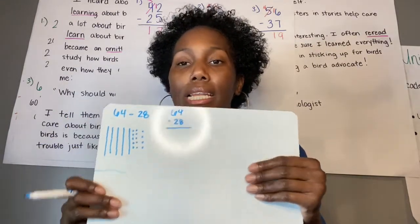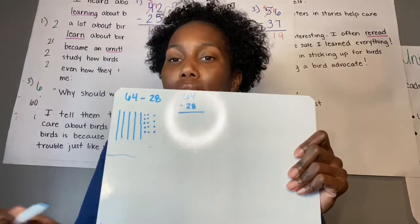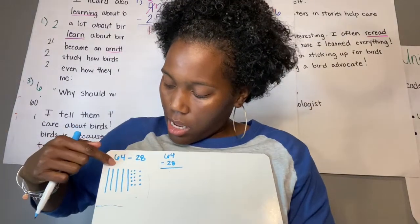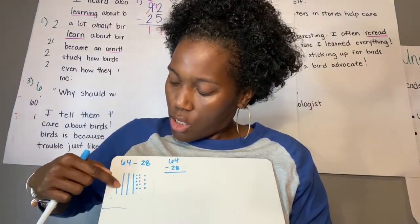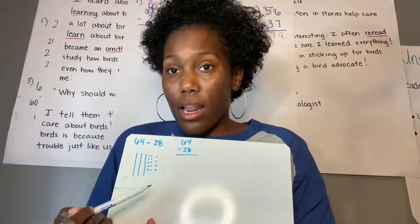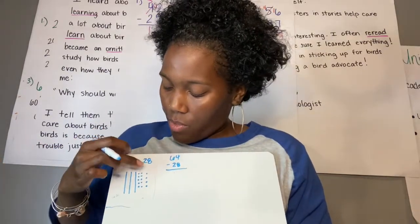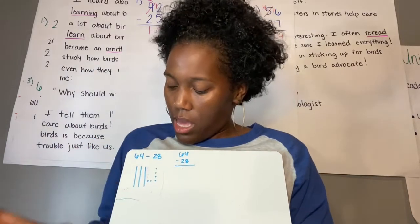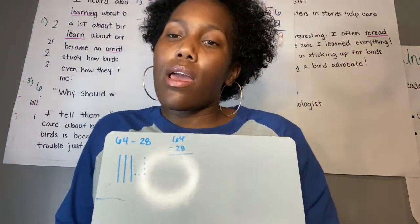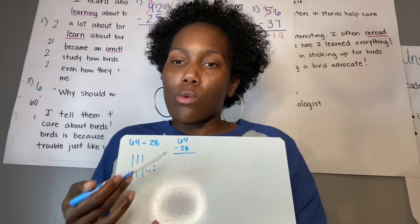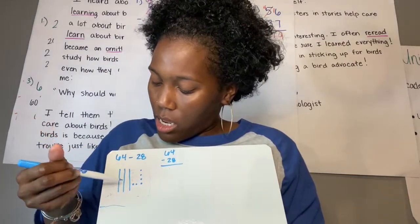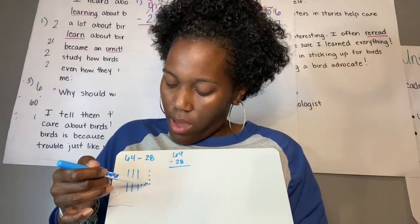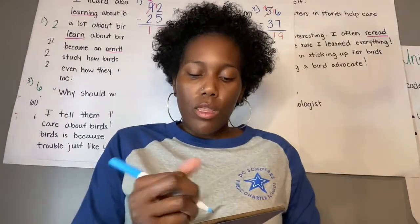Now I have that, and I need to take away 28. I can easily see if I take away 28 — I take away 2 tens, and then I count out 8 of my dots to see what I have left. After removing those, 64 minus 28 would be 10, 20, 30 — and then we switch count — 31, 32, 33, 34, 35, 36. That answer would be 36.